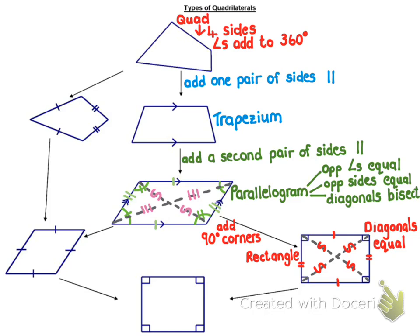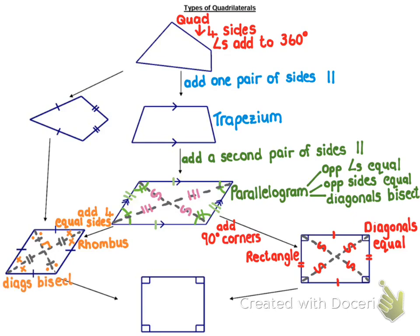Now if you go back to the parallelogram, and instead of adding 90 degree corners, what happens if you add all four sides equal? Then you get a shape called a rhombus. A rhombus is a type of parallelogram, so everything true in a parallelogram is true in a rhombus. But these four equal sides give it extra qualities. The diagonals will bisect at 90 degrees — that's not true in a parallelogram, only in a rhombus. And the diagonals will also bisect the corner angles. So the extra properties are: diagonals bisect at 90, and diagonals bisect your corner angles.